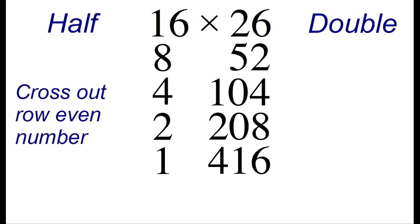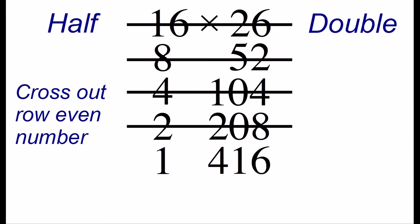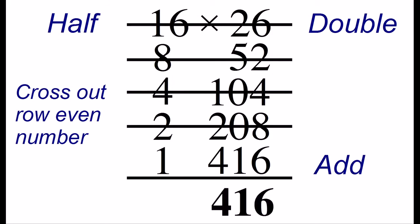The third step is to cross out any row in our table that starts with an even number. And in this table, we have a lot of even numbers. So we cross out the first row, the second row, the third, and the fourth row. The only row that remains is the last row, and so that's our answer, 416. And in fact, 16 times 26 is 416.